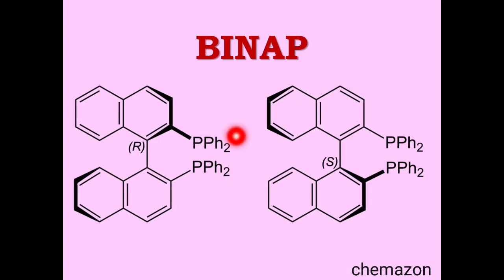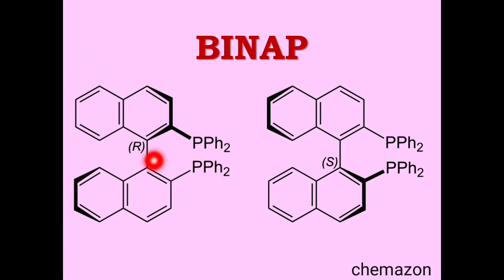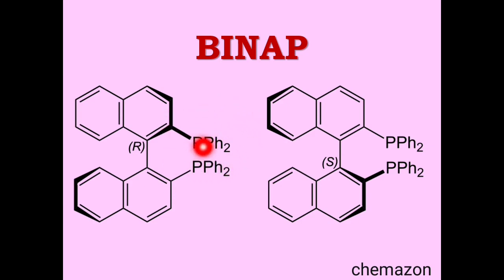Another similar type of compound to BINOL is BINAP. The same two naphthalene rings are connected by a carbon-carbon single bond. The only difference is that instead of two hydroxyl (OH) groups, we have diphenylphosphine (PPh₂) groups. This is the R configuration of BINAP and this is the S configuration of BINAP.